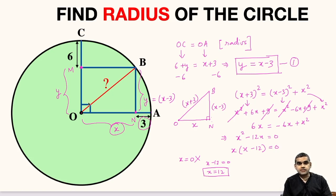What is the radius of the circle? So radius of the circle is this distance OB. And what is OB? OB is X plus 3. So here we will substitute X as 12. So 12 plus 3 will be 15 units. So the radius of this circle will be 15 units.